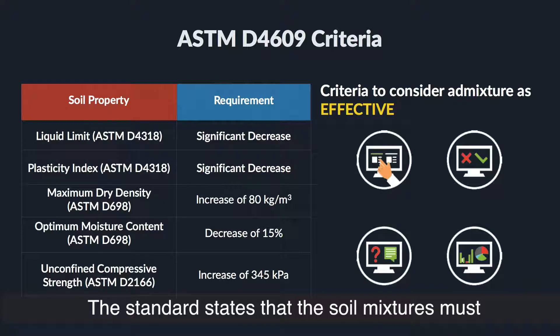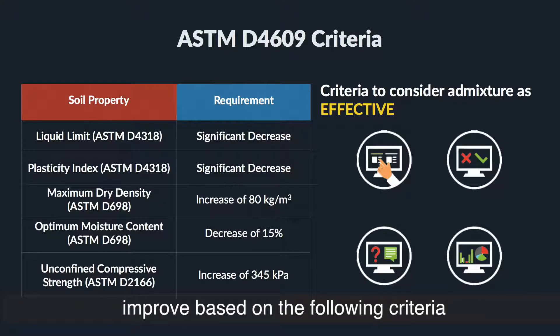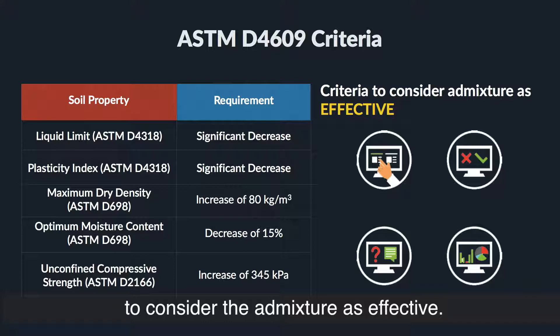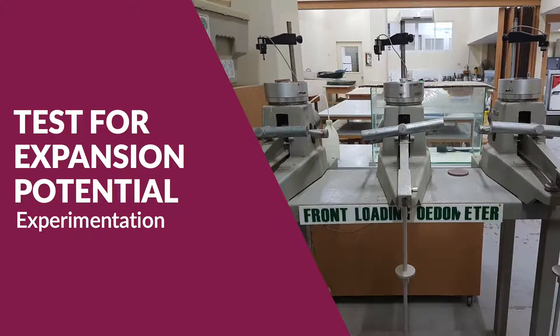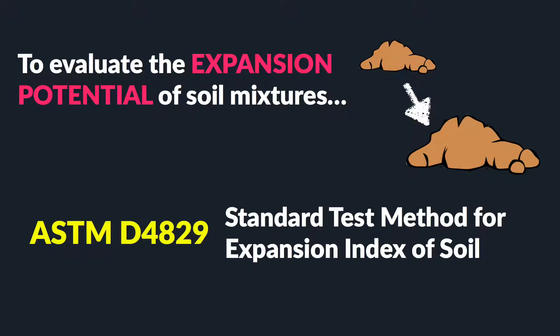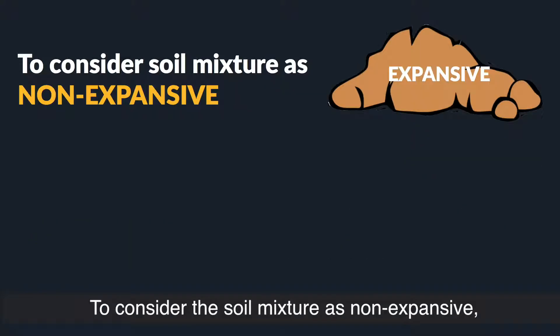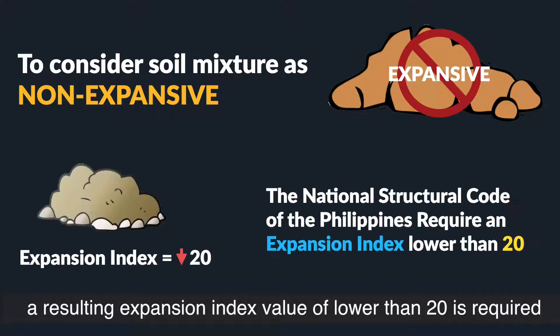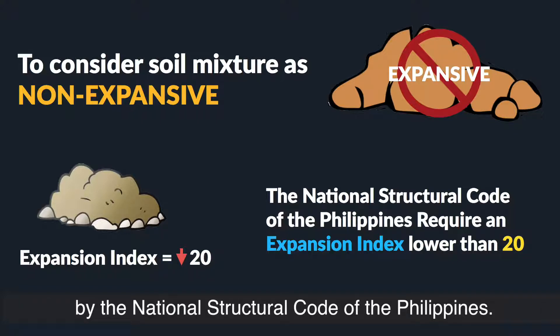The standard states that soil mixtures must improve based on specific criteria to consider the admixture as effective. The evaluation of the expansion potential of soil mixtures was performed through ASTM D4829. To consider the soil mixture as non-expansive, a resulting expansion index value lower than 20 is required by the National Structural Code of the Philippines.